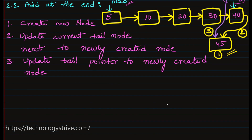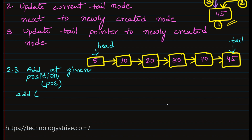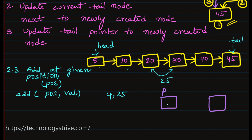After adding node 45 the linked list looks updated. The third case is inserting at some random position or after some node. The method signature looks like: add(position, value). For example, assume position is 4 and value is 25, meaning we want to insert at the fourth position — between 20 and 30. Whenever we want to insert a new element at a random position, we always need to know the previous element and the next element.